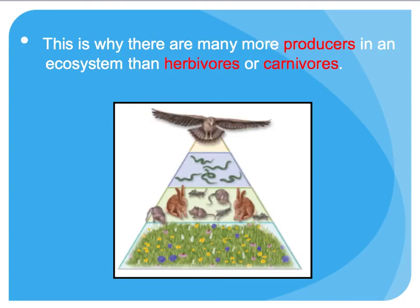This is why we see many more producers in an ecosystem than herbivores or carnivores — at each level, from producers to herbivores to carnivores, 90% of the energy is being lost. This doesn't mean animals at higher levels are necessarily smaller; it just means there will be fewer of them in number because so much energy is lost.